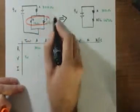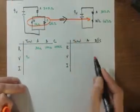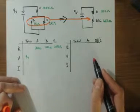So by combining B and C into one resistor, I end up with a series circuit.